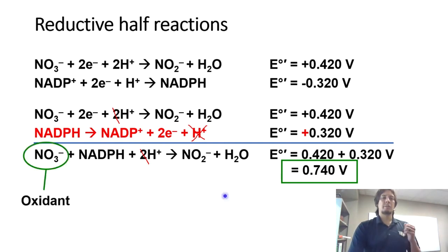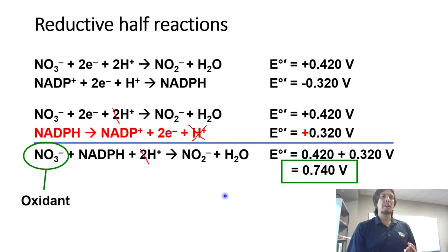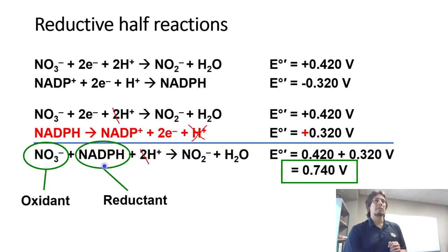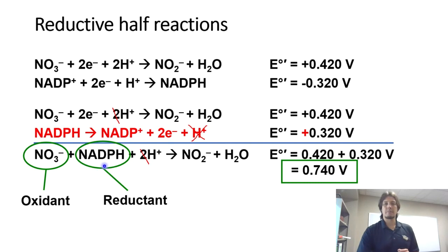To identify the roles: nitrate is the oxidant and NADPH is the reductant. Also make a mental note that this is a two-electron process, as we'll need that on the next step.